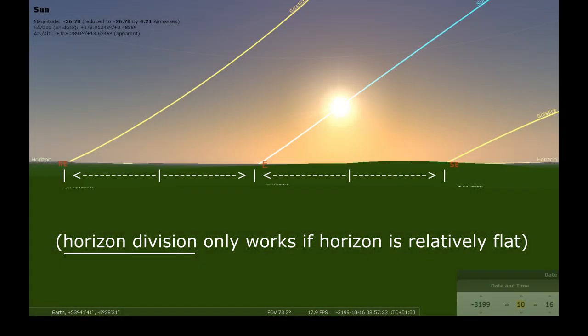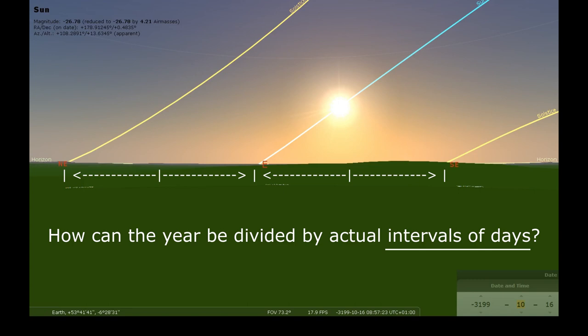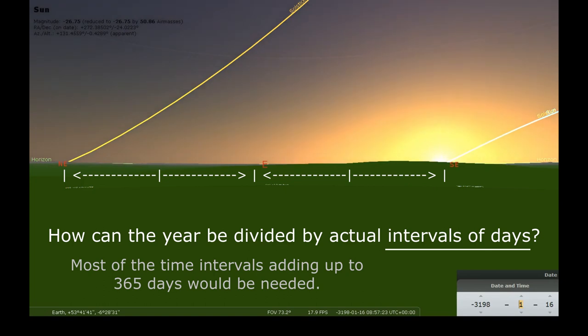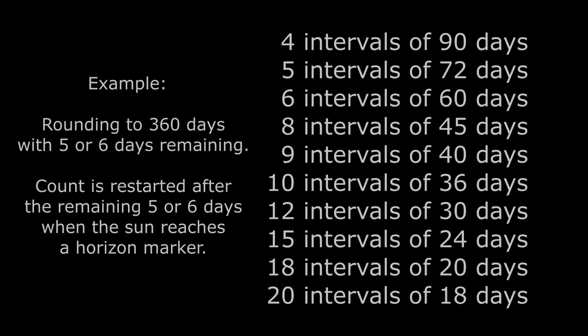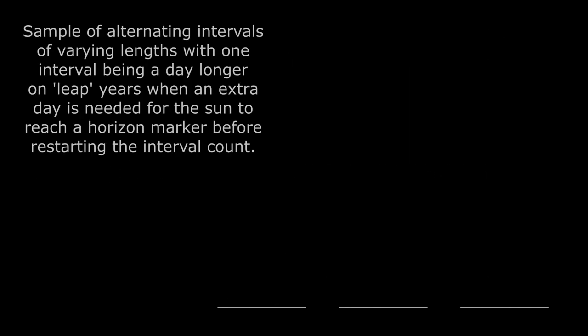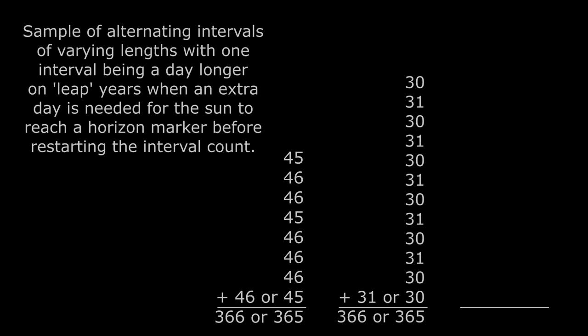Instead of dividing the horizon of a particular location, how could the year be divided by actual intervals of days? If we want to keep with the solar year, it could be divided into any number of smaller parts, but the uneven days makes this difficult. One method might be to just round the days off so that they can be divided easily. A few days would be left over, and the solar marker could be used to restart the count.